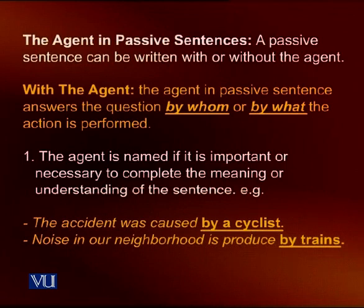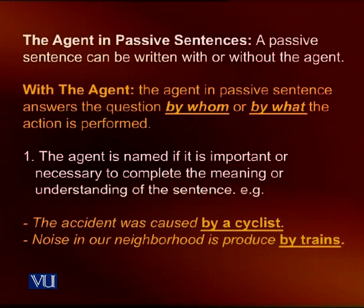Regarding the agent in passive sentences: a passive sentence can be written with or without an agent. By agent, we mean the doer of the action. The agent in a passive sentence answers the question 'by whom' or 'by what' the action is performed. The agent is named if it is important or necessary to complete the meaning or understanding of the sentence.